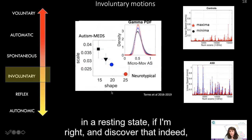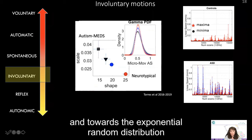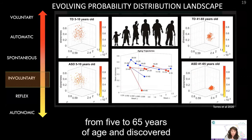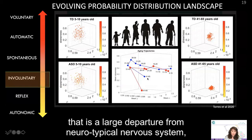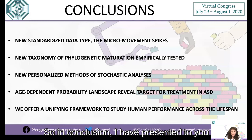We went back to thousands of participants in resting state fMRI and discovered that there is a systematic shift in noise-to-signal ratio towards the exponential random distribution with the use of psychotropic medications. We also examined thousands of individuals from five to 65 years of age and discovered they have different stochastic trajectories in the gamma moment space. By the age of 40, there is a large departure from the typical nervous system trajectory, and indeed the literature reports a high incidence of Parkinsonism after age 40 in autism.